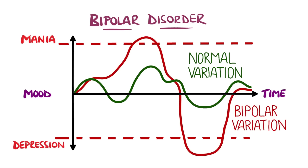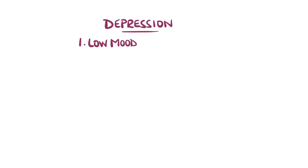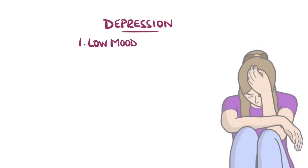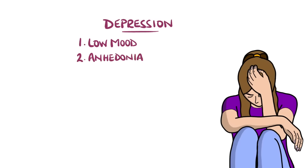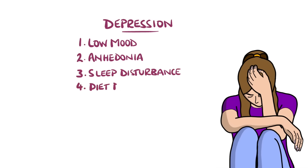We'll come back to this graph, but first we need to define depressive and manic symptoms. According to the DSM-5, depressive symptoms include a low mood, anhedonia — meaning a loss of interest in previously enjoyed activities — and diet or sleep disturbances.